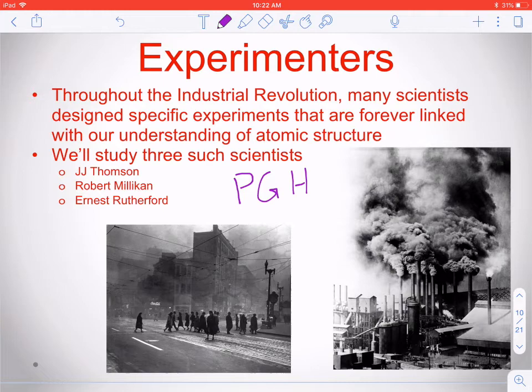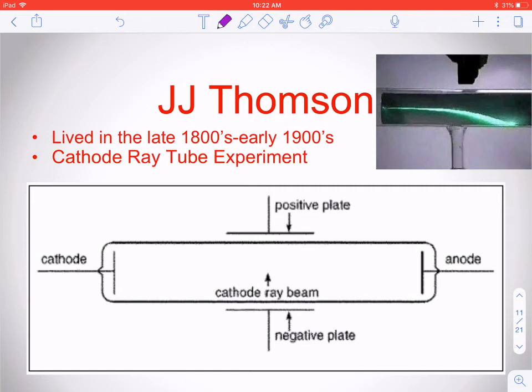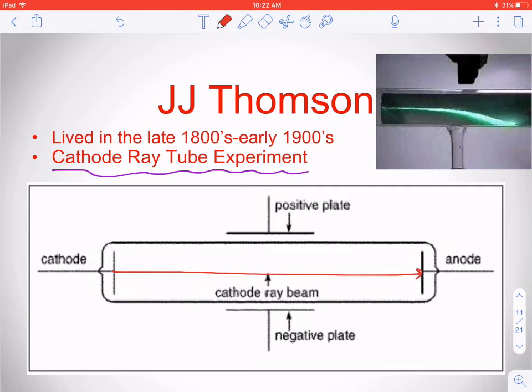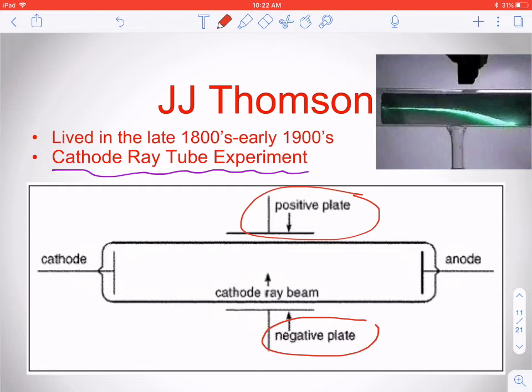First let's talk about J.J. Thomson. He did experiments with the cathode ray tube. The beam came out of a cathode and normally traveled in a straight line to the anode — not very groundbreaking at the time. But then he took a positively charged plate and put it on one side, and a negatively charged plate on the other side of the cathode ray tube. When he fired the beam again, he noticed it bent right where the charged plates were.